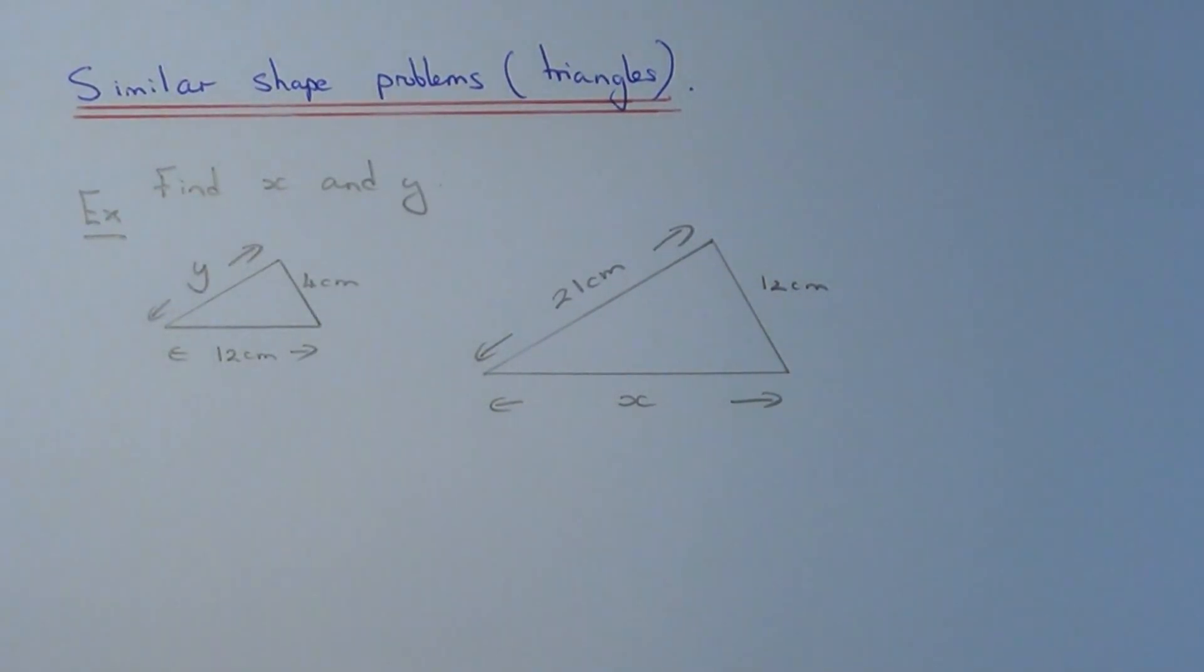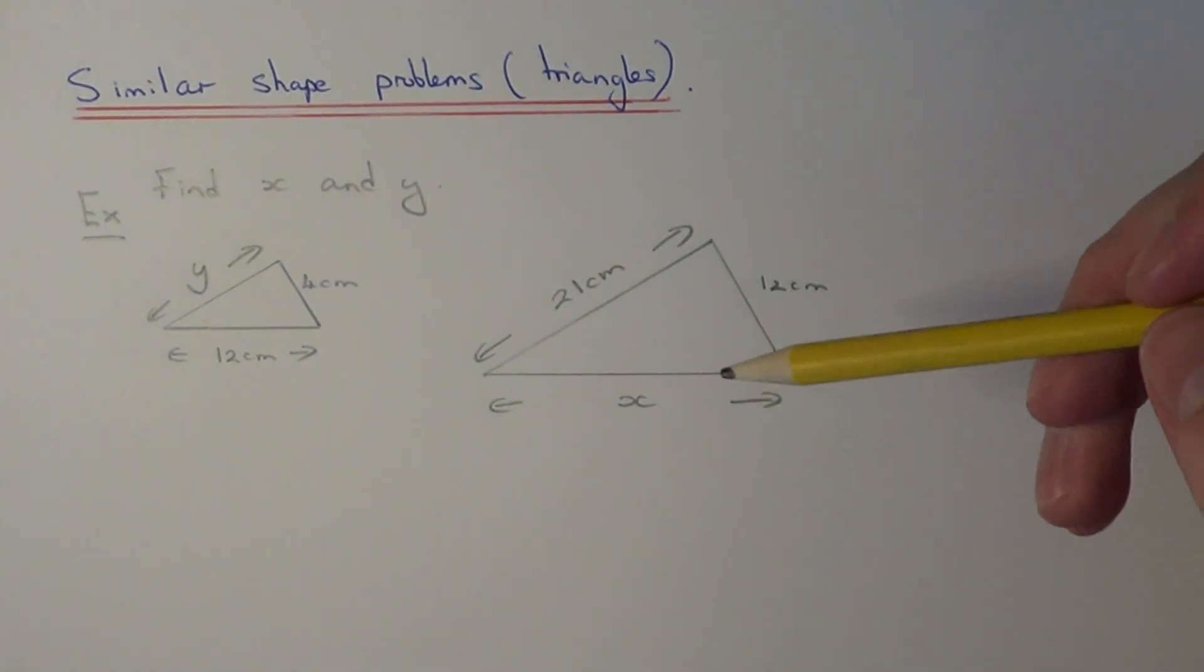So step one then will always be to work out the scale factor of the enlargement. And you do this by dividing two matching sides of the triangle.